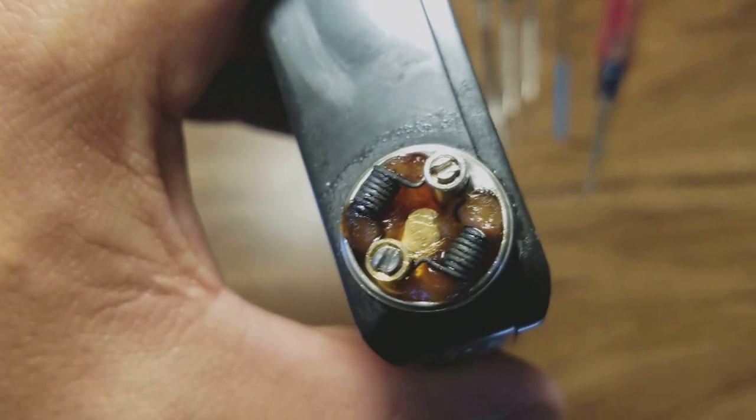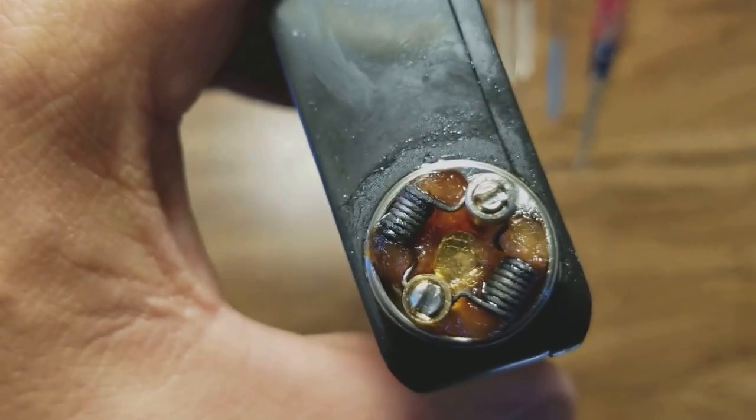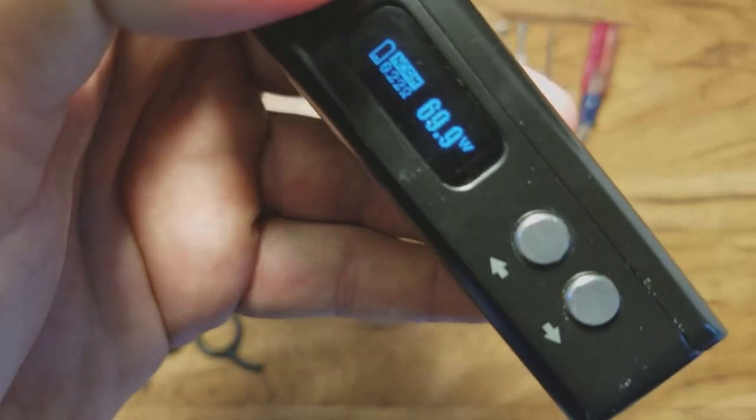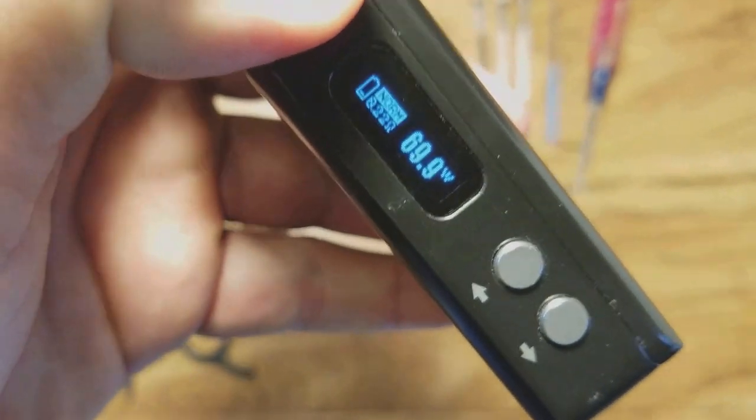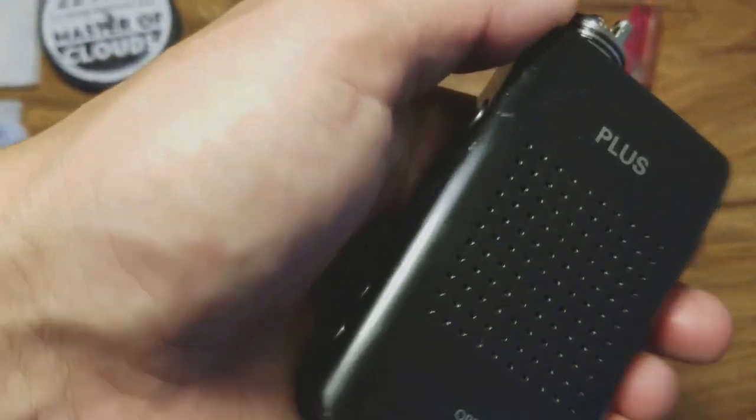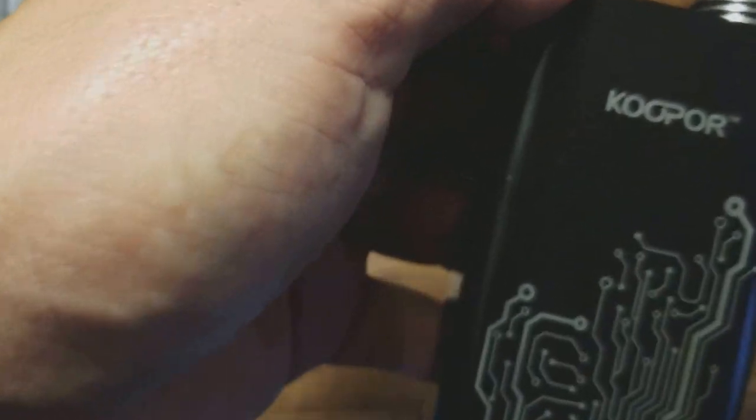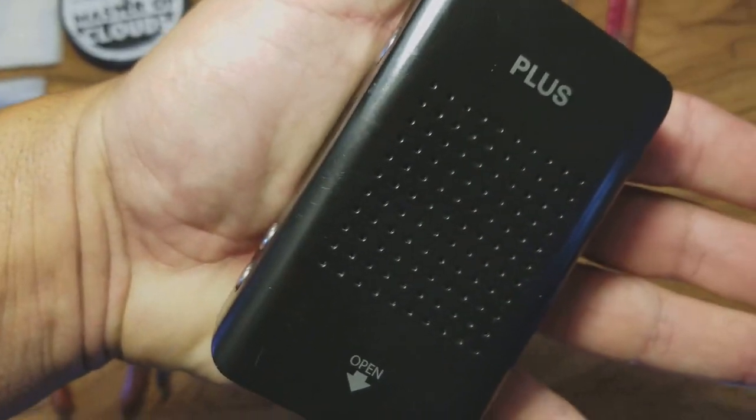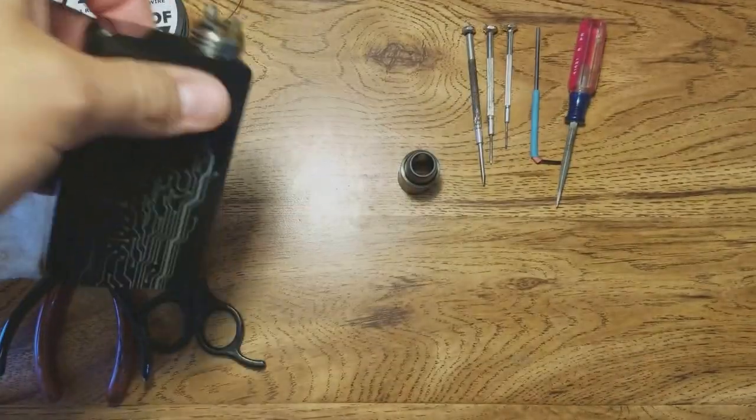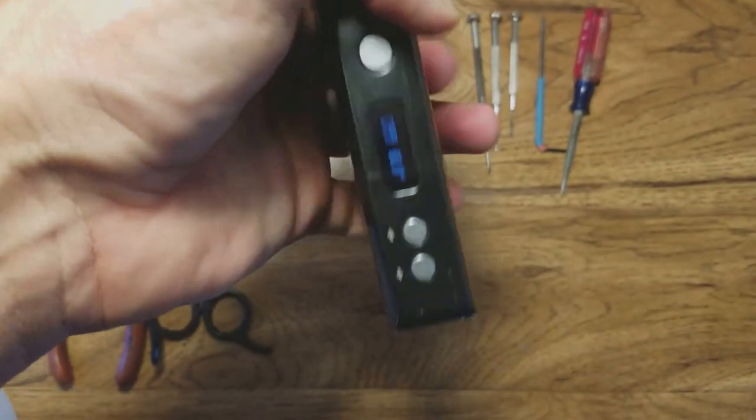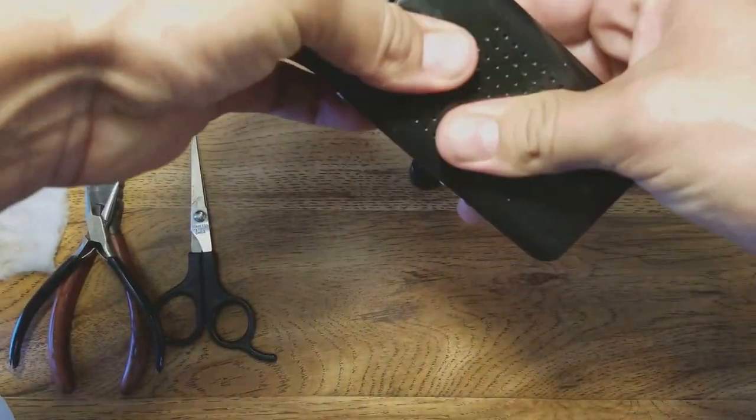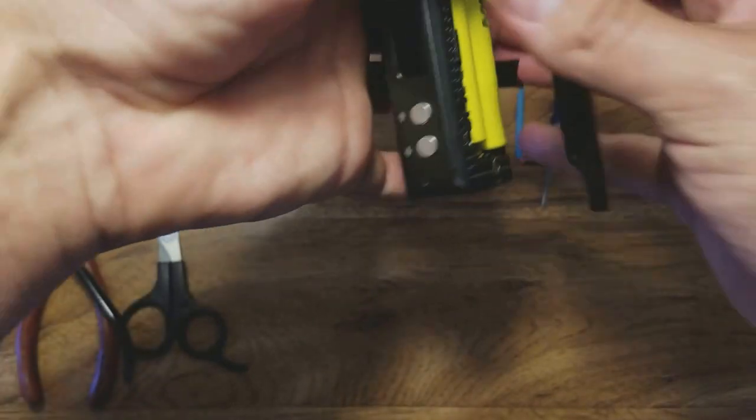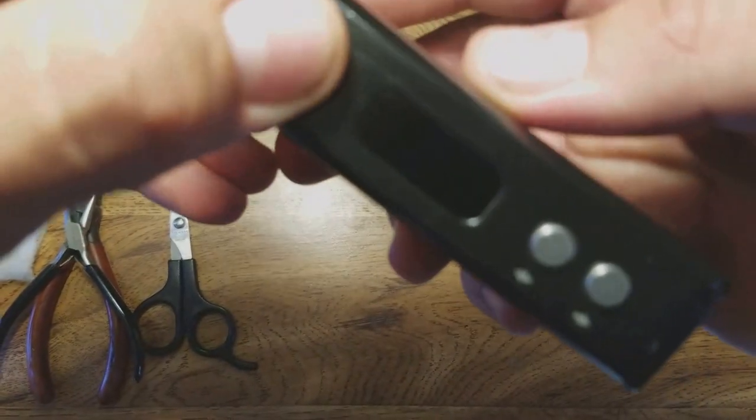It's eight wraps of 22 gauge kanthal at 0.22 ohms. So when I'm vaping on the Cloupor Plus, the Cooper Plus 200 watt box mod, takes two 18650s. Almost dropped it, so yeah it's a little dead.